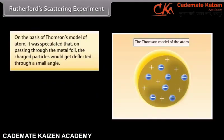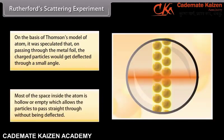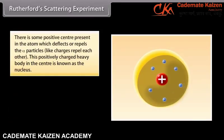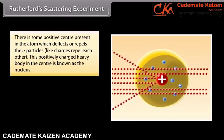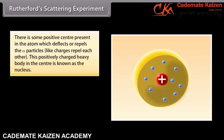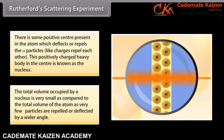On the basis of Thomson's model of atom, it was speculated that on passing through the metal foil, the charged particles would get deflected through a small angle. Key observations: most of the space inside the atom is hollow or empty, which allows the particles to pass straight through without being deflected. There is some positive center present in the atom which deflects or repels the particles — like charges repel each other. This positively charged heavy body in the center is known as the nucleus. The total volume occupied by a nucleus is very small as compared to the total volume of the atom, as very few particles are repelled or deflected by a wider angle.